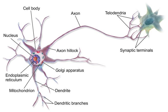Early treatments of neural networks can be found in Herbert Spencer's Principles of Psychology, Third Edition, Theodore Maynard's Psychiatry, William James' Principles of Psychology, and Sigmund Freud's Project for a Scientific Psychology.